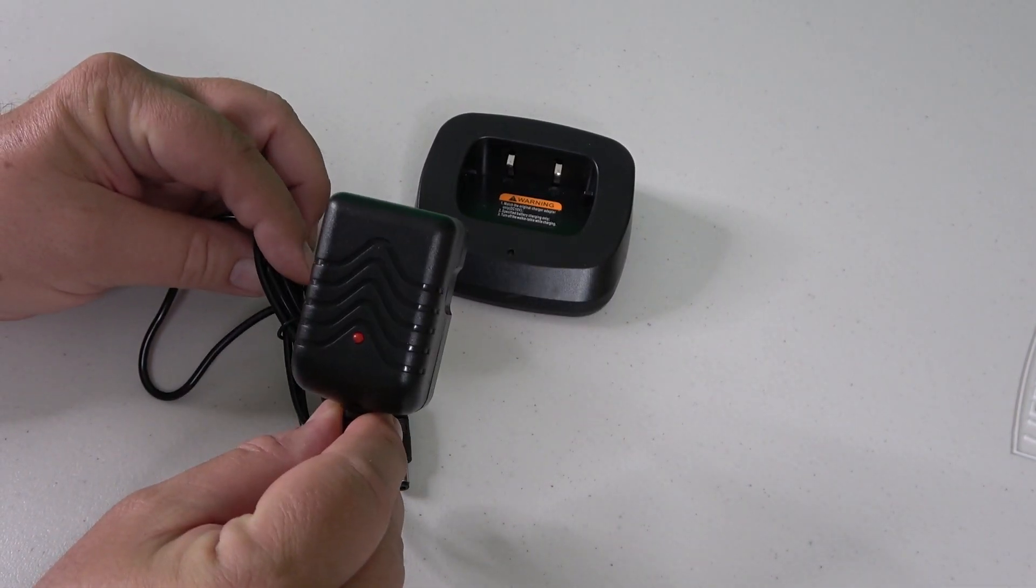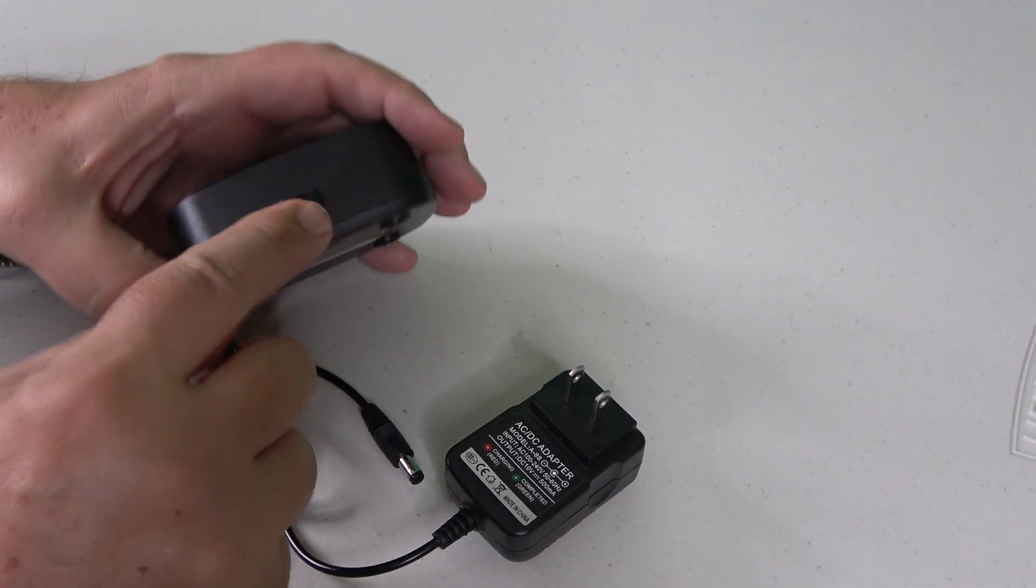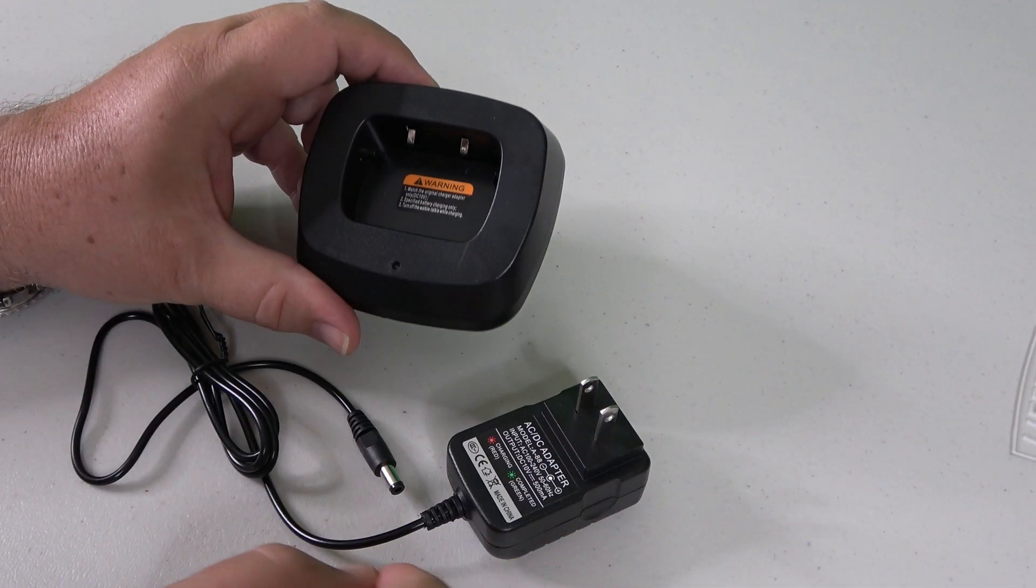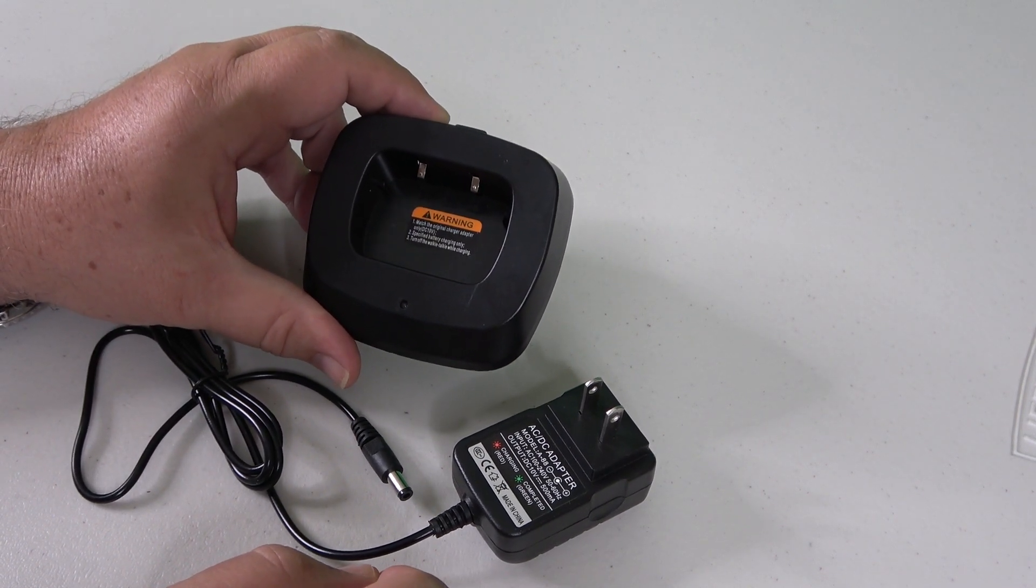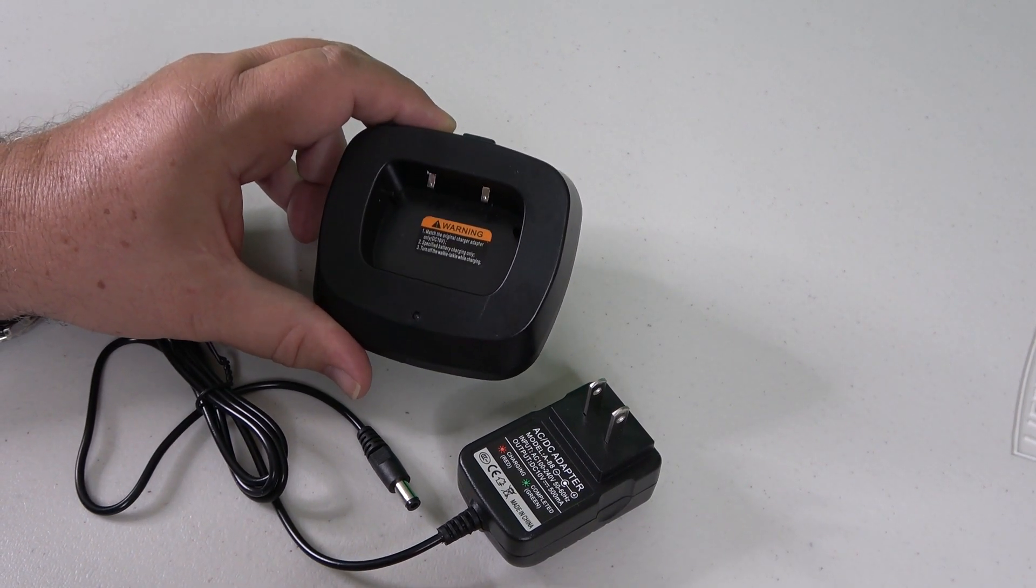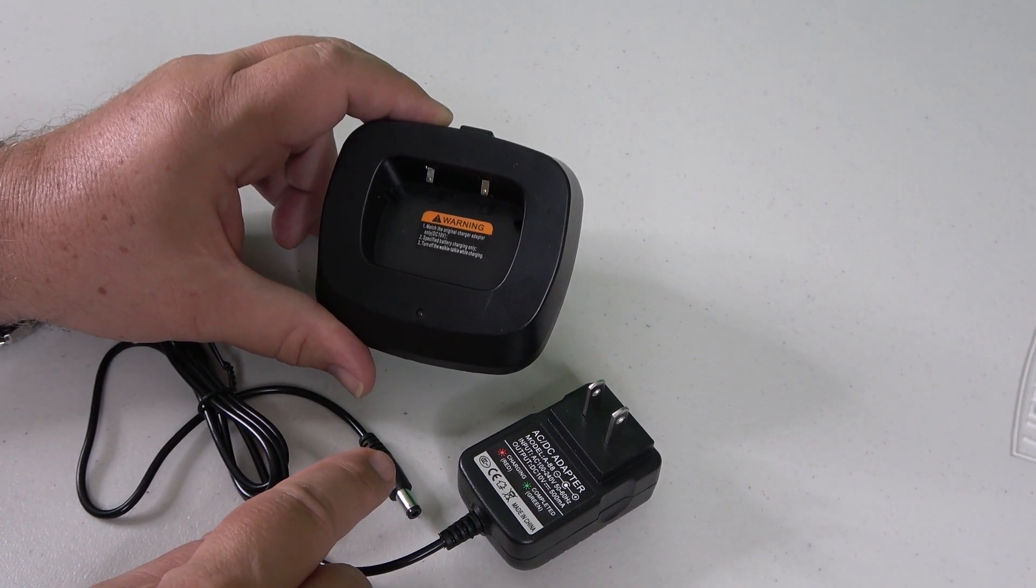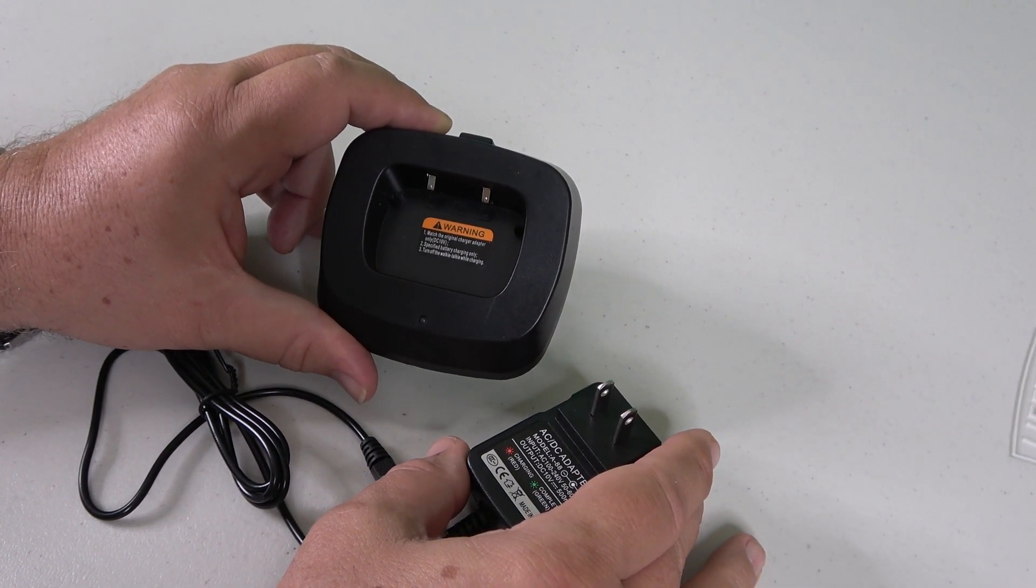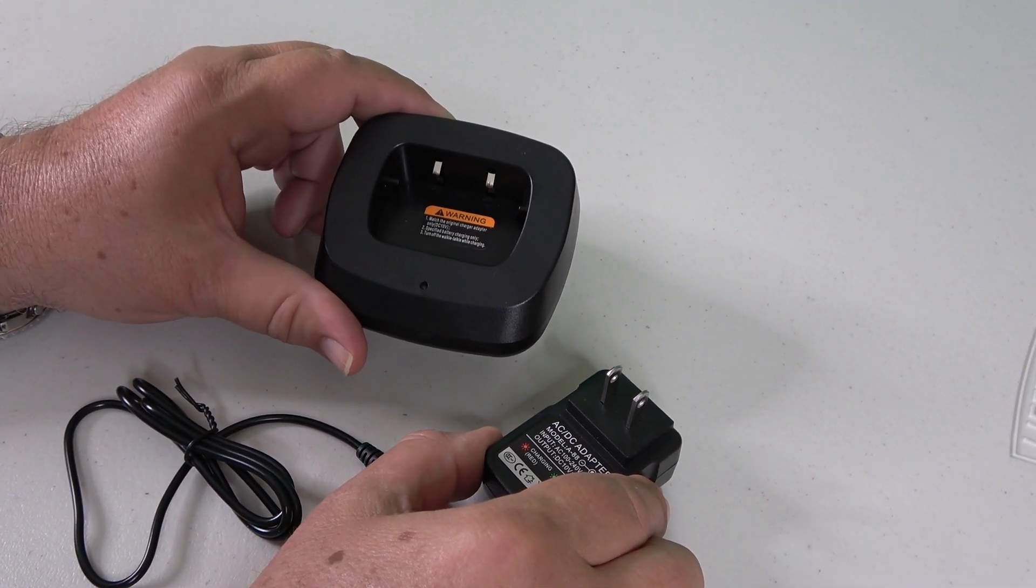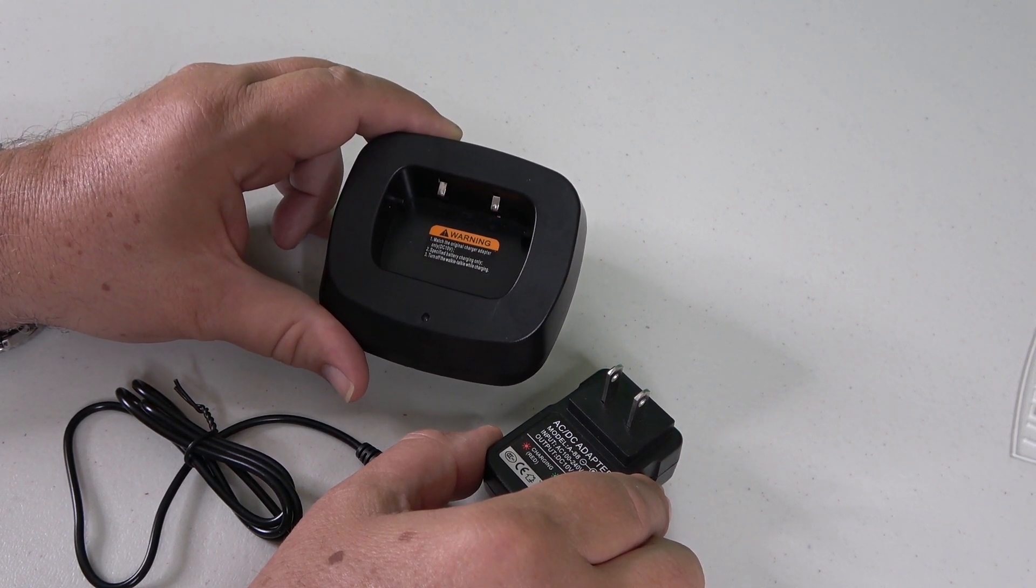It also comes with a little wall wart-style adapter. It's got a 10-volt output, and then a charging cradle, where you can plug the charger into on the back. I'm always amazed with these little inexpensive radios. They come with charging cradles when the expensive handhelds, you have to buy them separately for more than what this radio costs itself. That's the charging mechanism. I'm going to label this, since I've got several of them, and they tend to use different voltages. So I'm going to make sure that I have this labeled, so I'm using the right charging cradle with the right radio.